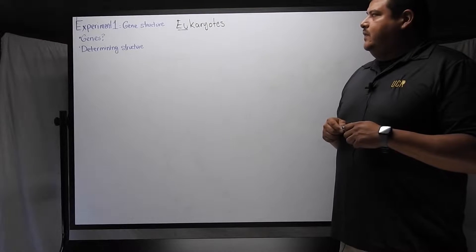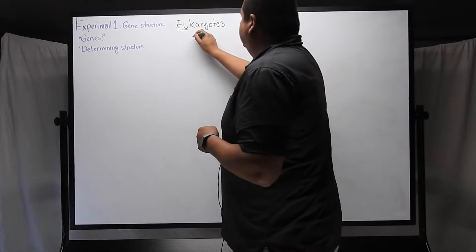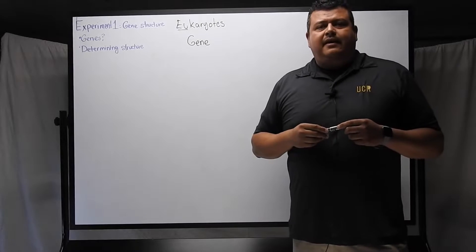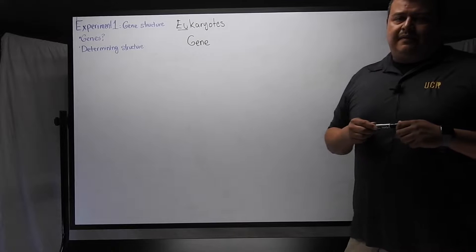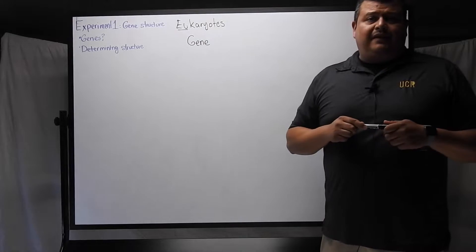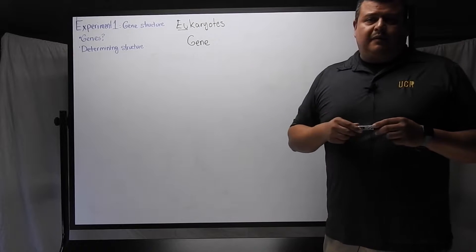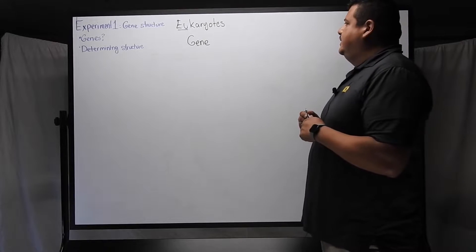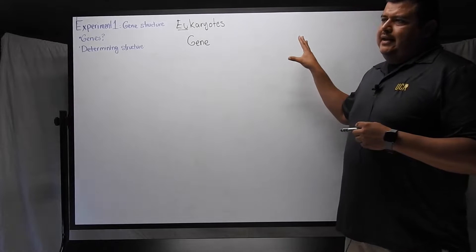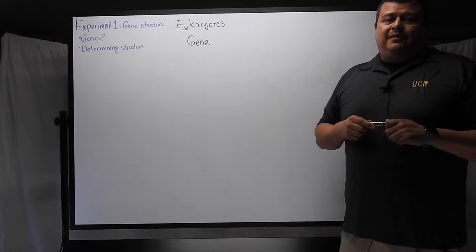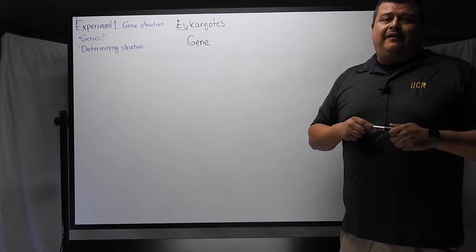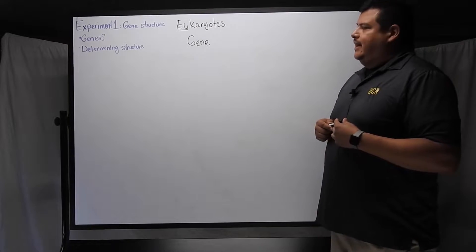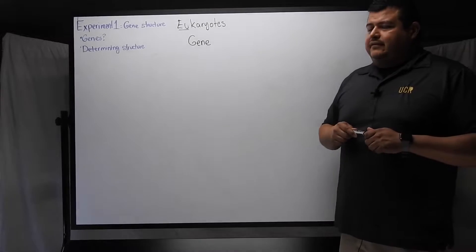We're not going to talk about that case today. We're going to talk about eukaryotes and focus on that. In eukaryotes, a gene is a region in the DNA that codes for something, codes for proteins, or some have other functional properties.